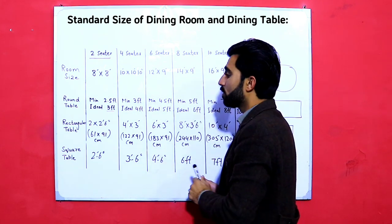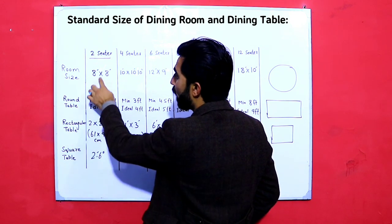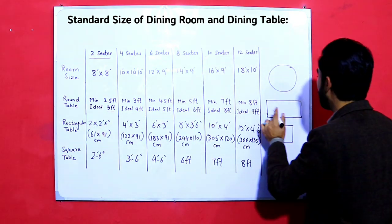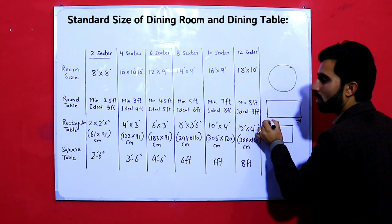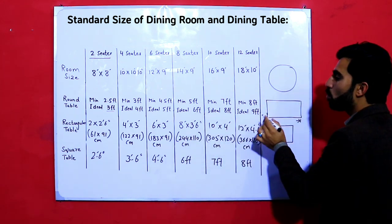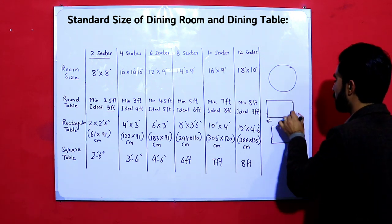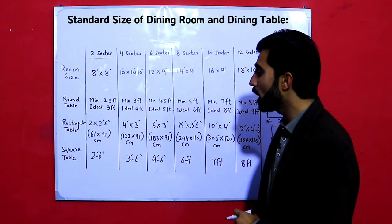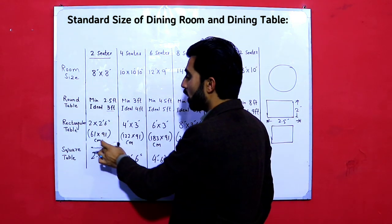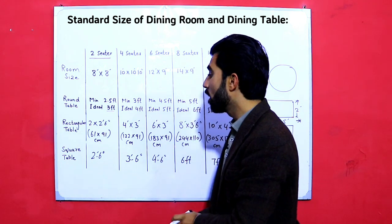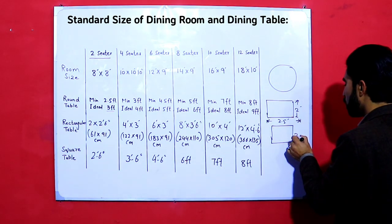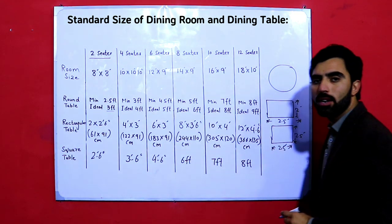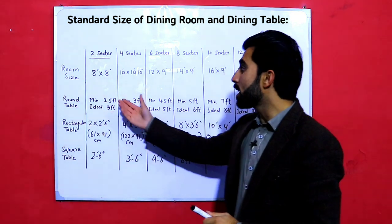For a rectangular dining table in an eight by eight feet dining room, the minimum size should be two feet by two point five feet, which is 61 by 91 centimeters. For a square dining table, it should be two point five feet by two point five feet. The dining room size remains eight by eight feet.